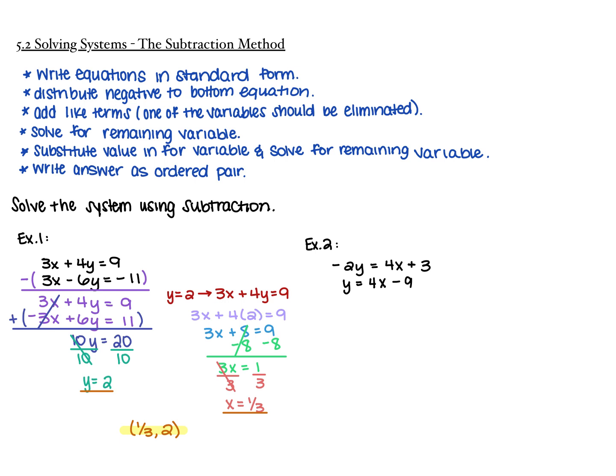Now that you know y, you can find x. Use one of the original equations — it doesn't matter if it's the top or the bottom. Using the top one, plug 2 in for y: 3x plus 4 times 2 equals 9. That 4 times 2 is 8. Subtract the 8 over and you get 3x equals 1, so x equals 1/3. Since x is 1/3 and y is 2, the ordered pair — the solution — is (1/3, 2).